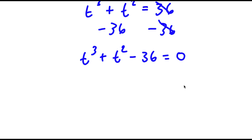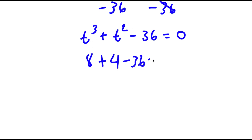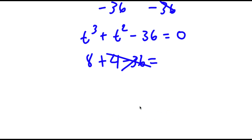To solve this, I need to find one value of t to find the rest, so I'll start plugging in values. If I plug in 0, that gives negative 36. If I plug in 2, that's 8 plus 4 minus 36, which doesn't work. If I plug in 3, that's 27 plus 9 minus 36, which equals 0 — that works. So t equals 3 is one value of t.